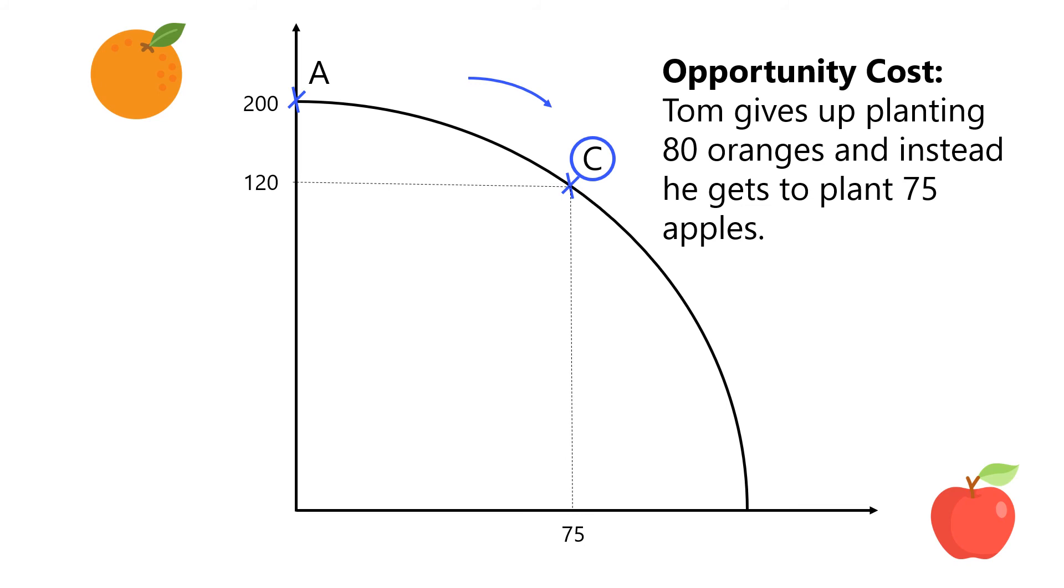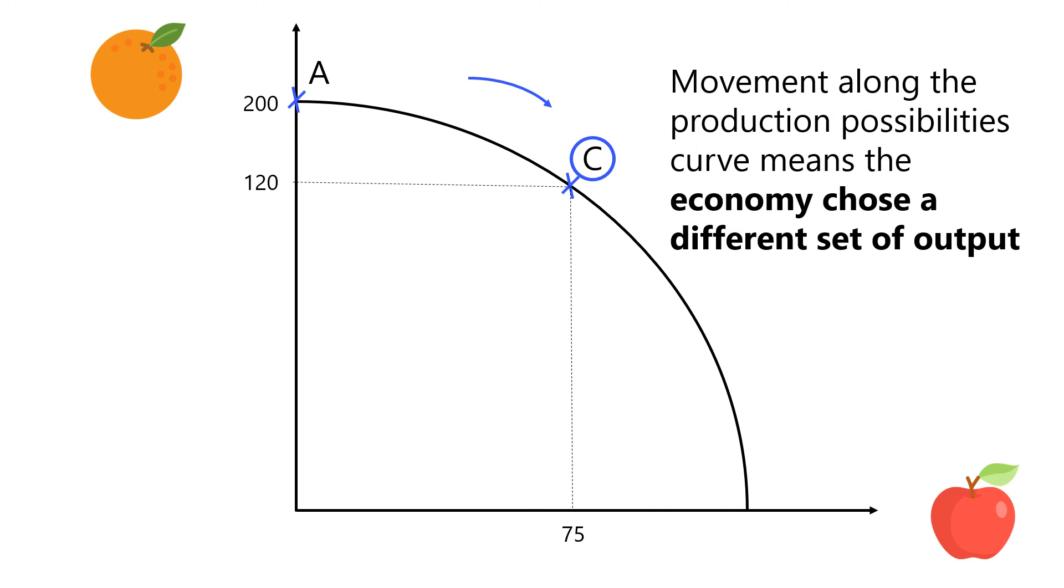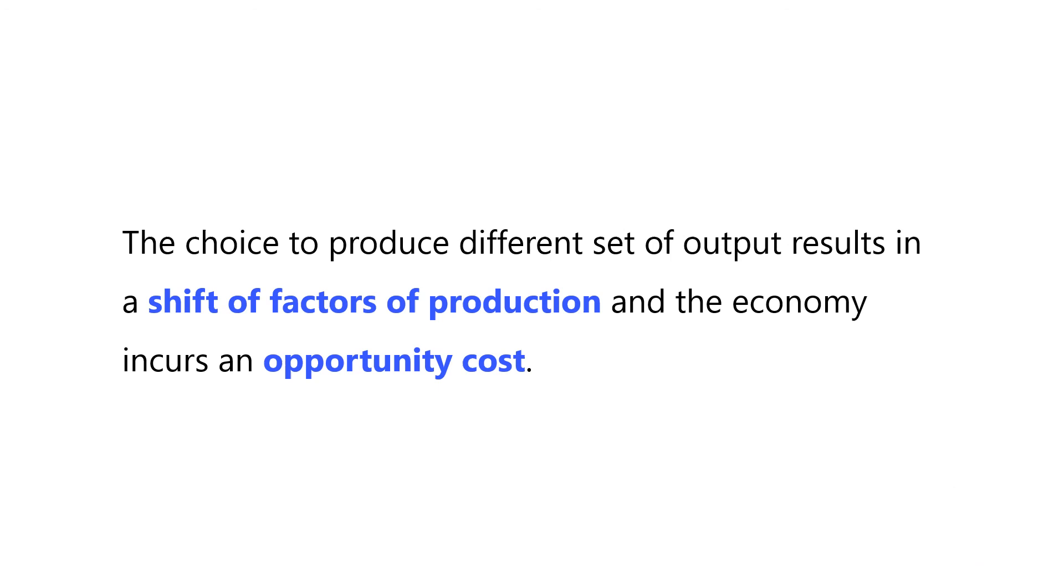From this example, we learn that when there is a movement along the Production Possibilities Curve, the economy has made a choice to produce different combinations of the two goods. The choice to produce different set of output results in a shift of factors of production and the economy incurs an Opportunity Cost.